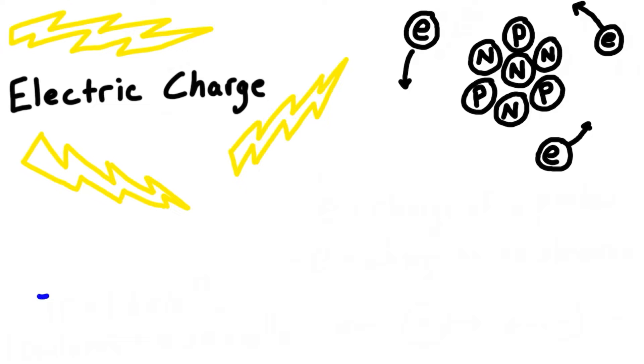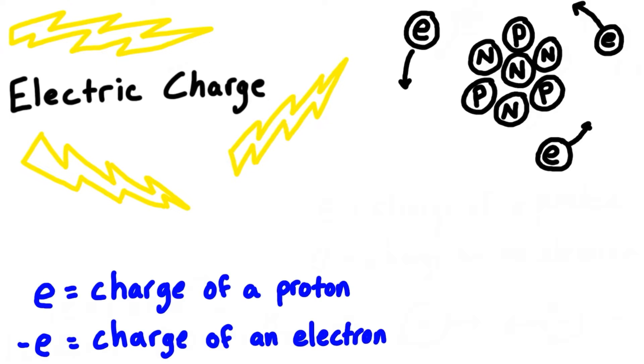The charge of a proton is assigned with the letter e and the charge of an electron is assigned with a negative e. When we look at our lithium here we have three protons each with a positive charge and three electrons each with a negative charge. Three positives and three negatives of the same thing gives us a net charge of zero. But if this atom was to lose one electron then the atom would have two electrons and three protons, so it would have a net charge of positive one e as three minus two is just one.